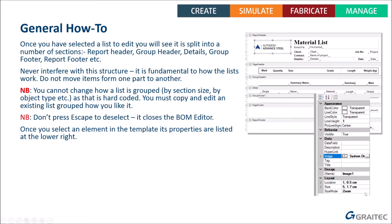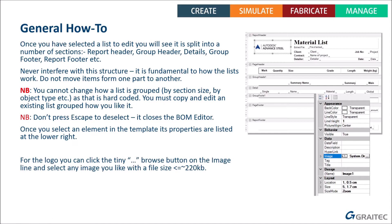Once you've selected the element you want to edit, look at the bottom right of the interface for the properties list. For a logo, a lot of people only ever want to change it to their company logo — that's absolutely fine. Select the logo, find the Image property line, and click the tiny button with three dots on the right. You can then browse and select any image on disk. The image file size must be less than around 220KB — if you go above that it may show but will refuse to save.